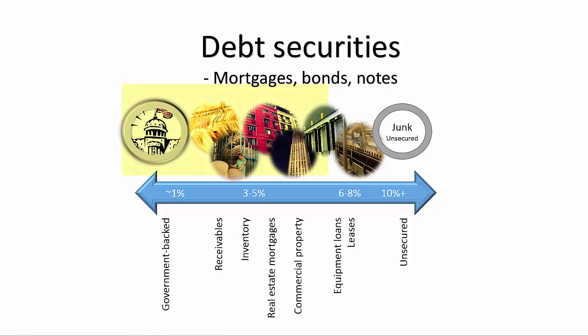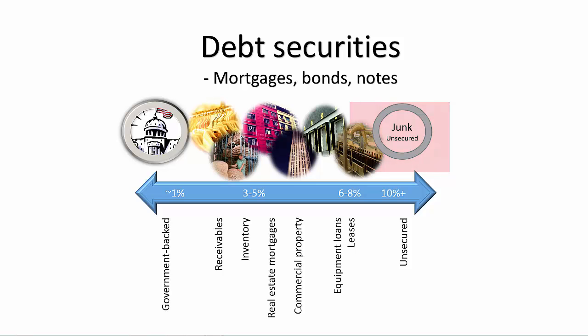At the low end of the risk range, you have a debt security that may be well secured or backed directly or indirectly by various levels of government. At the high end of the range, you may have debt securities which are unsecured and have no such guarantees. You may have heard of the colloquial term junk bond, which refers to a low-grade debt security with a high risk of default.